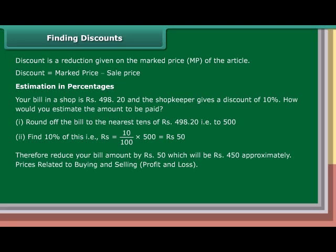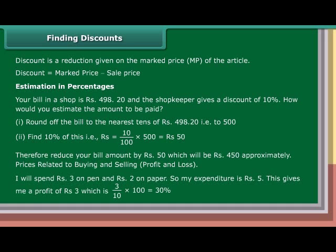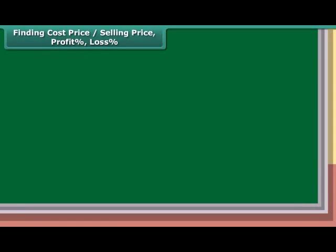Price related to buying and selling — profit and loss: I spent Rs. 3 on a pen and Rs. 2 on paper, so my expenditure is Rs. 5. This gives a profit of Rs. 3, which is 3/10 × 100 = 30%. Finding Cost Price, Selling Price, Profit in Percentage, and Loss in Percentage.